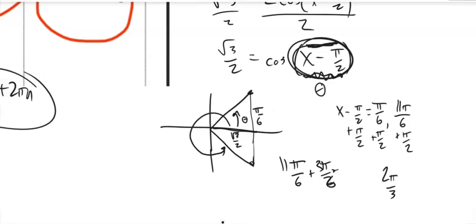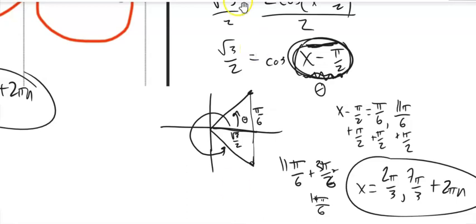And then if I think about 11 pi over 6 plus pi over 2, again 3 pi over 6, that's 14 pi over 6, which is 7 pi over 3. And then they're both plus 2 pi n. All right, I hope those help.